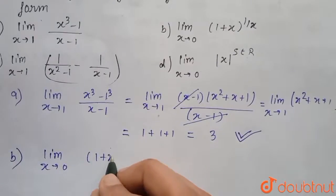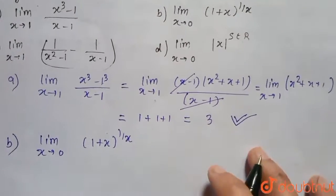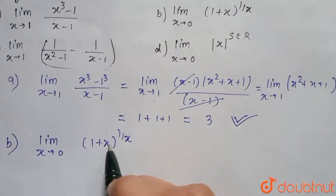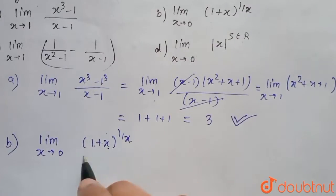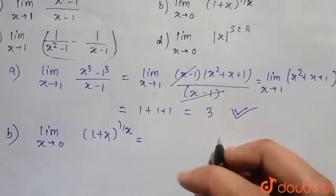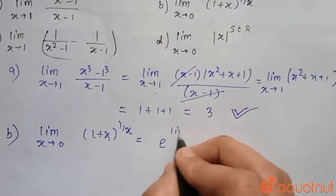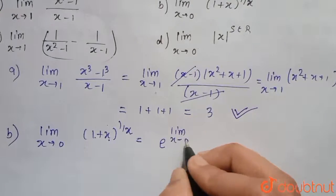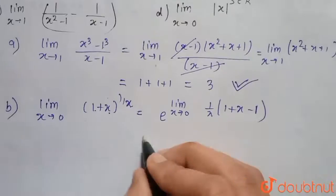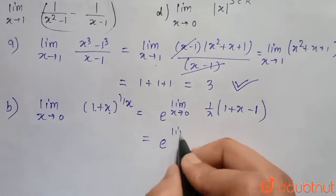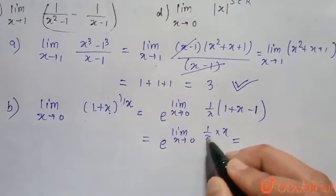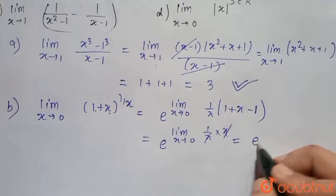Option B is the limit as x tends to 0 of (1 + x)^(1/x). If we put x = 0, this becomes 1 to the power infinite, which is an indeterminate form. We rewrite this as e raised to the limit as x tends to 0 of (1/x) × [(1 + x) - 1], which simplifies to e raised to the limit of (1/x) × x = e^1 = e.